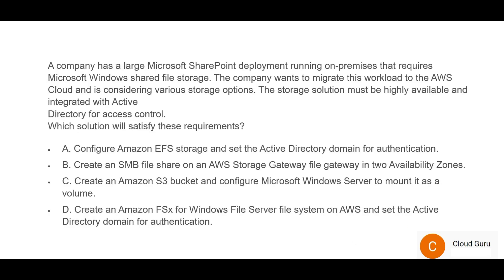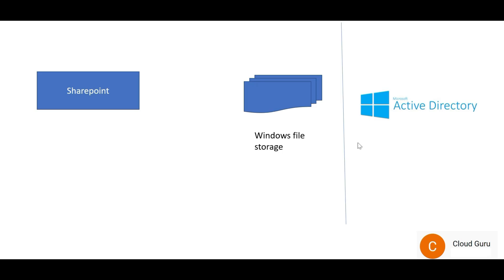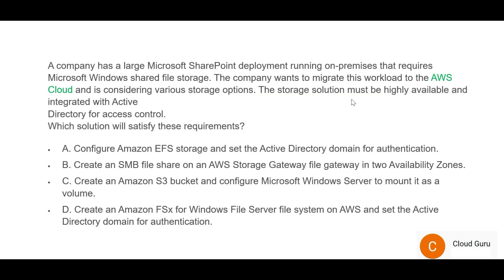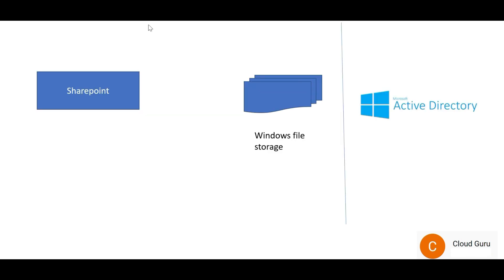You have a Microsoft SharePoint deployment running on-premises that requires Windows file storage — this is a shared storage. The company wants to migrate the workload to AWS cloud, and the solution should be integrated with Active Directory for access control. So this setup on the left-hand side you have to move to the right-hand side, which is on AWS cloud with Active Directory integrated.